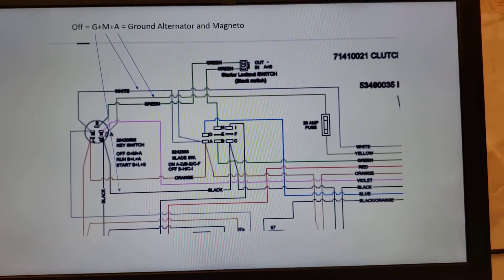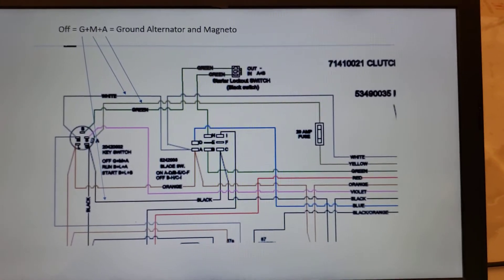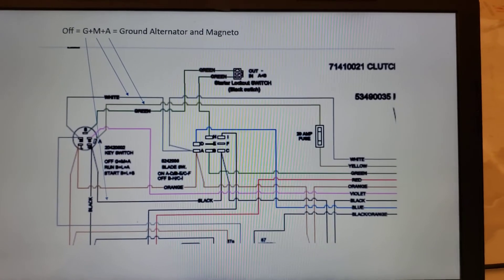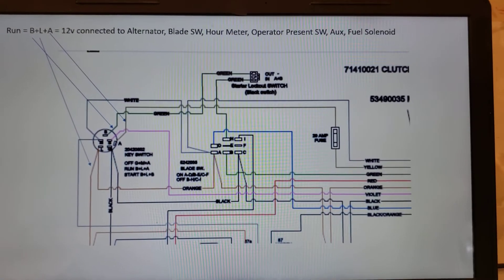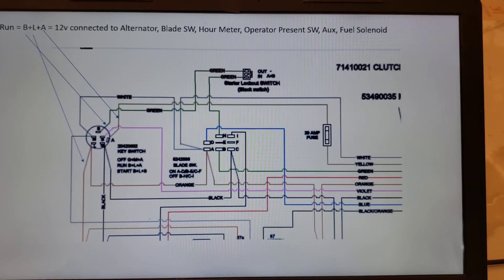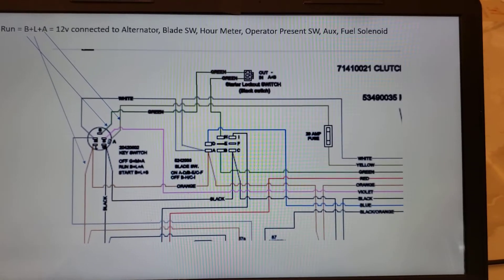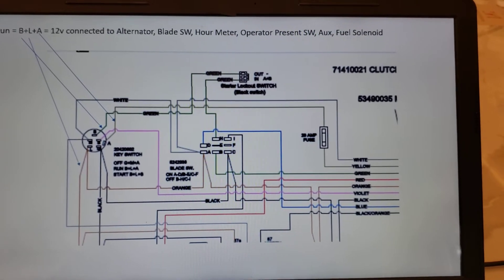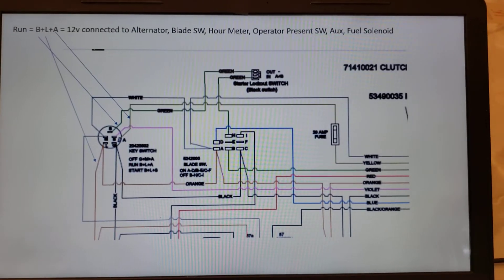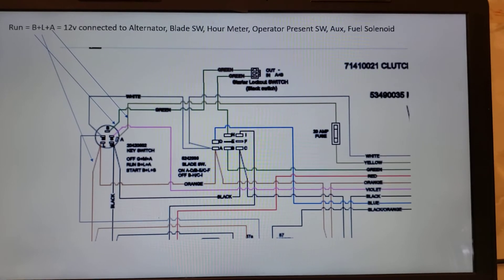This right here is the key switch in the off mode. It's basically grounding out the alternator and magneto. When you're in the run mode, you're connecting your 12-volt battery up to the alternator, the blade switch, hour meter, operator present switch, auxiliary, and the fuel solenoid. So that shoots the 12 volts around your system.